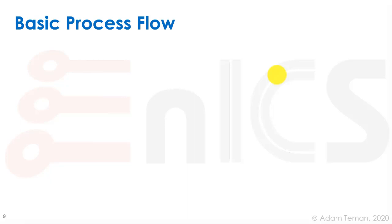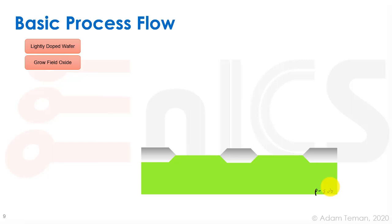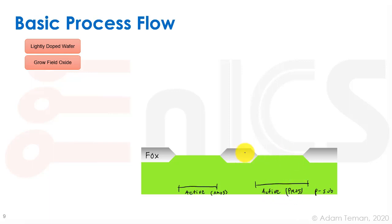Now let's go over the basic process flow. We start with the P-substrate — a lightly doped P-type wafer. We grow what we call a field oxide (FOX): a very thick oxide that separates between transistors. One area will be an active area where we make an NMOS, and another active area where we make a PMOS. The regions between them are separated by these thick oxide pieces, which ensure no currents flow side to side between transistors.